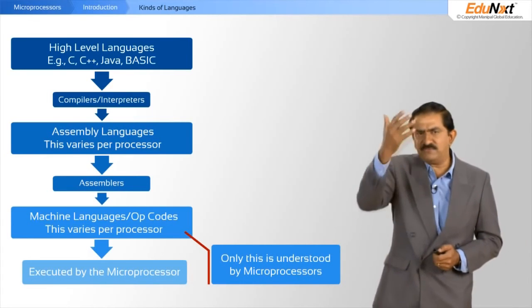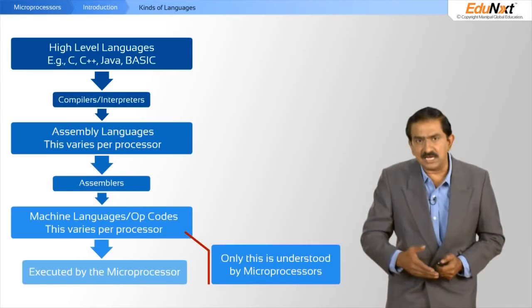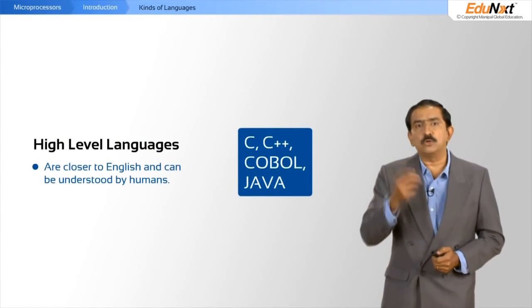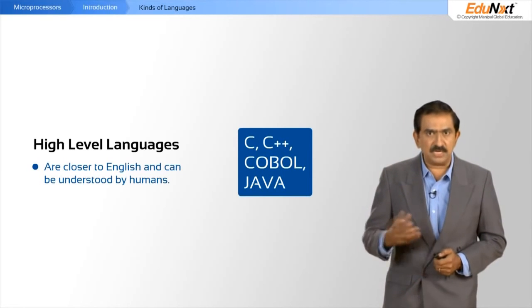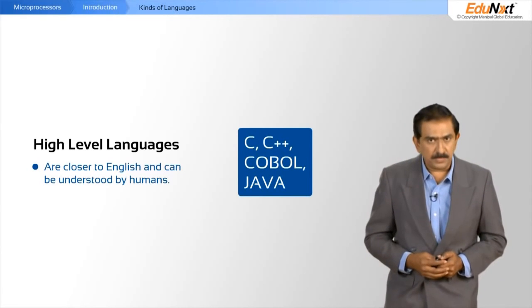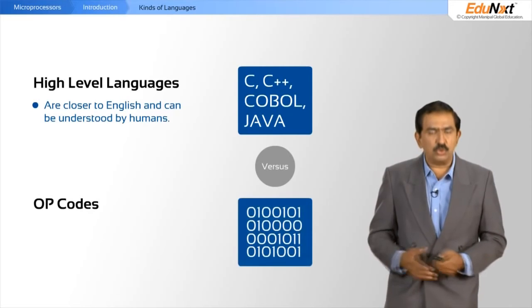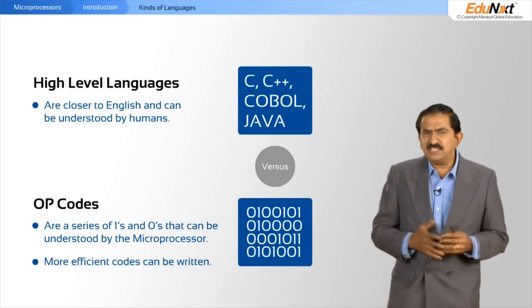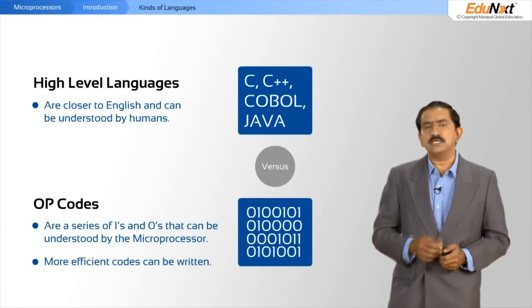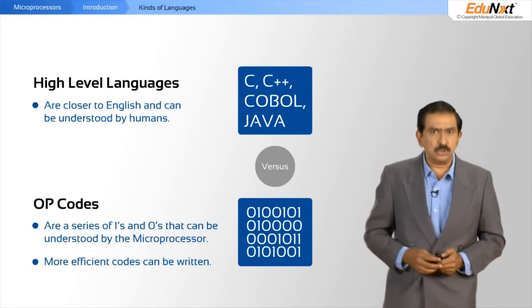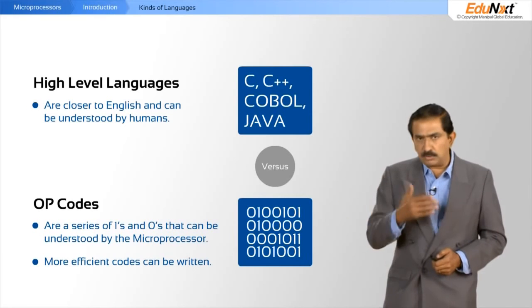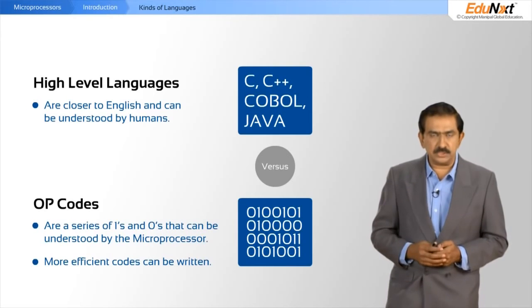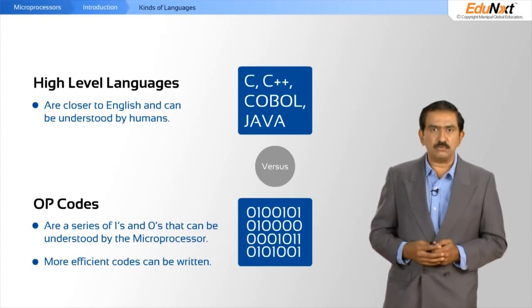So why do you have this hierarchy of languages? High-level languages are closer to English and can be understood by human beings, whereas opcodes are just a series of ones and zeros. A human being finds it extremely difficult to handle strings of ones and zeros, but for a microprocessor it is in its natural state — it loves ones and zeros.